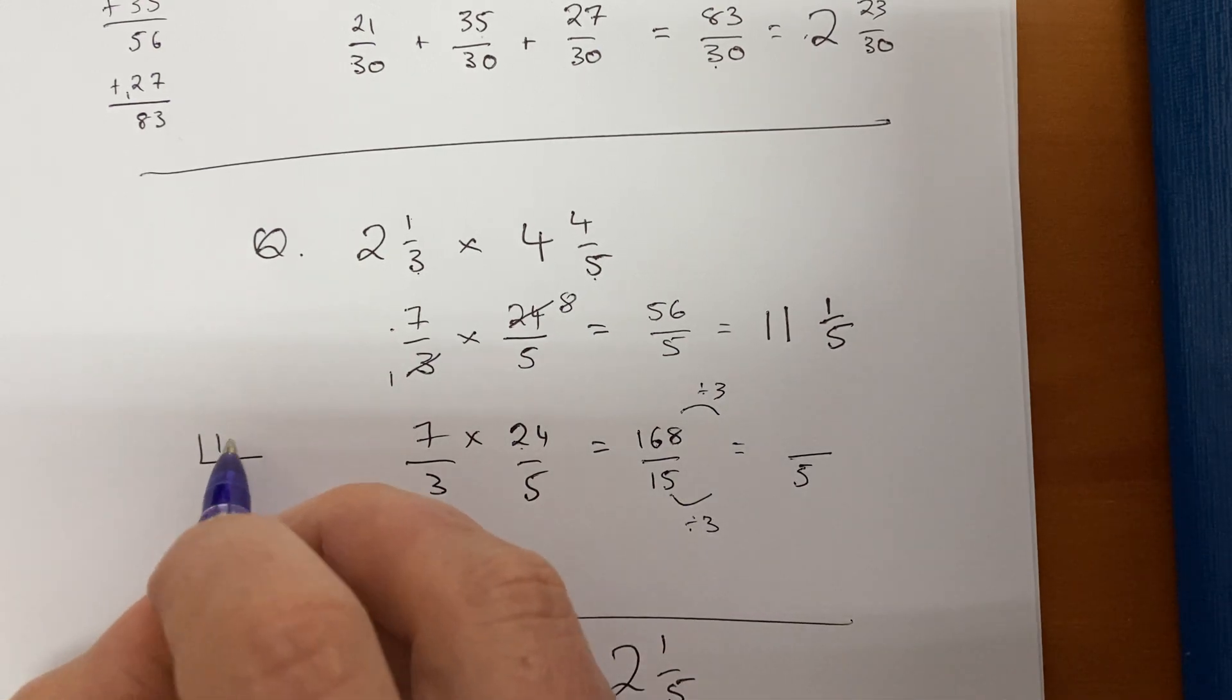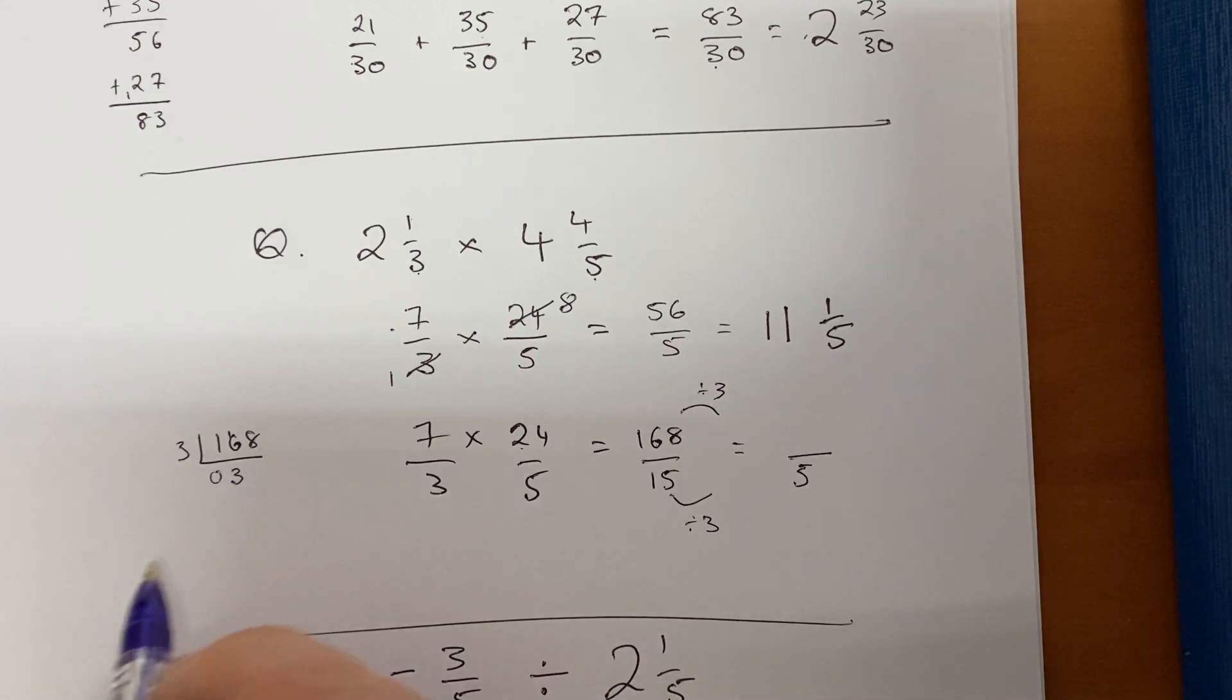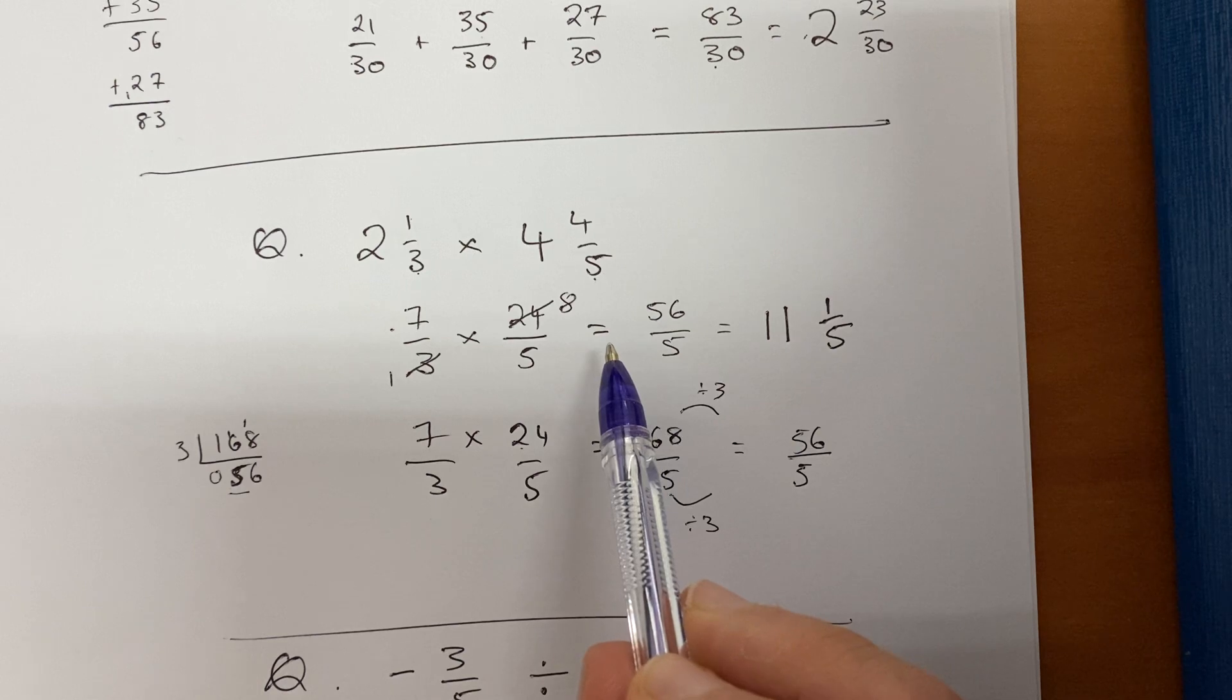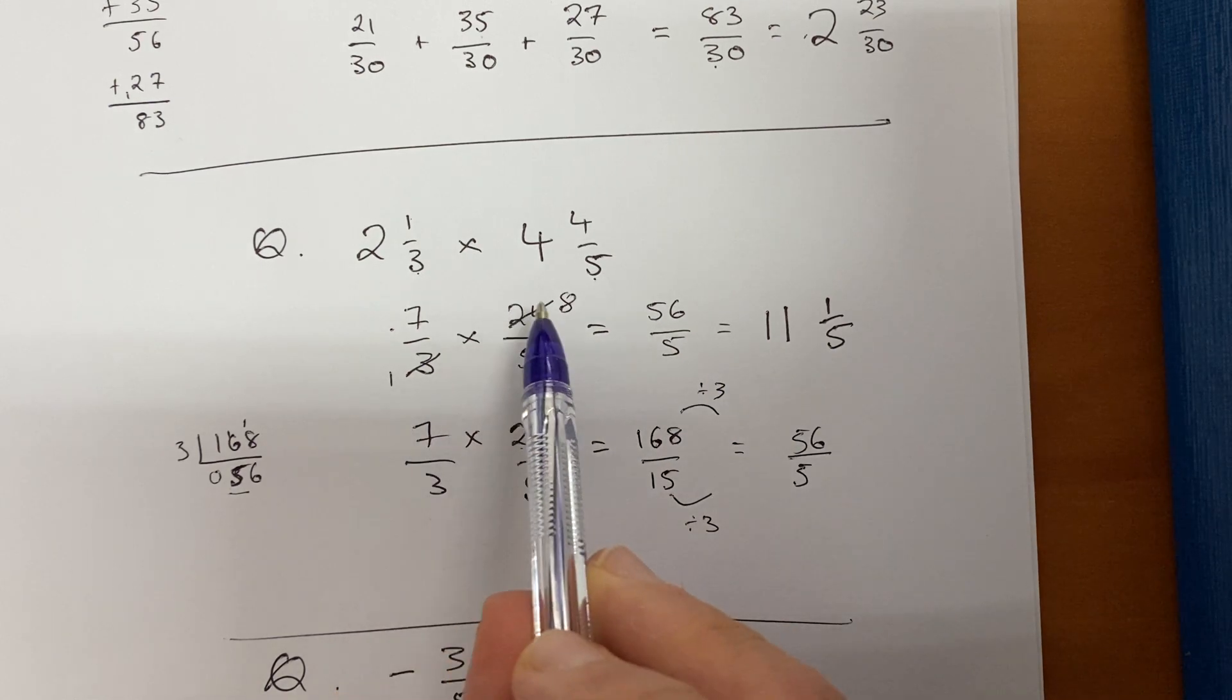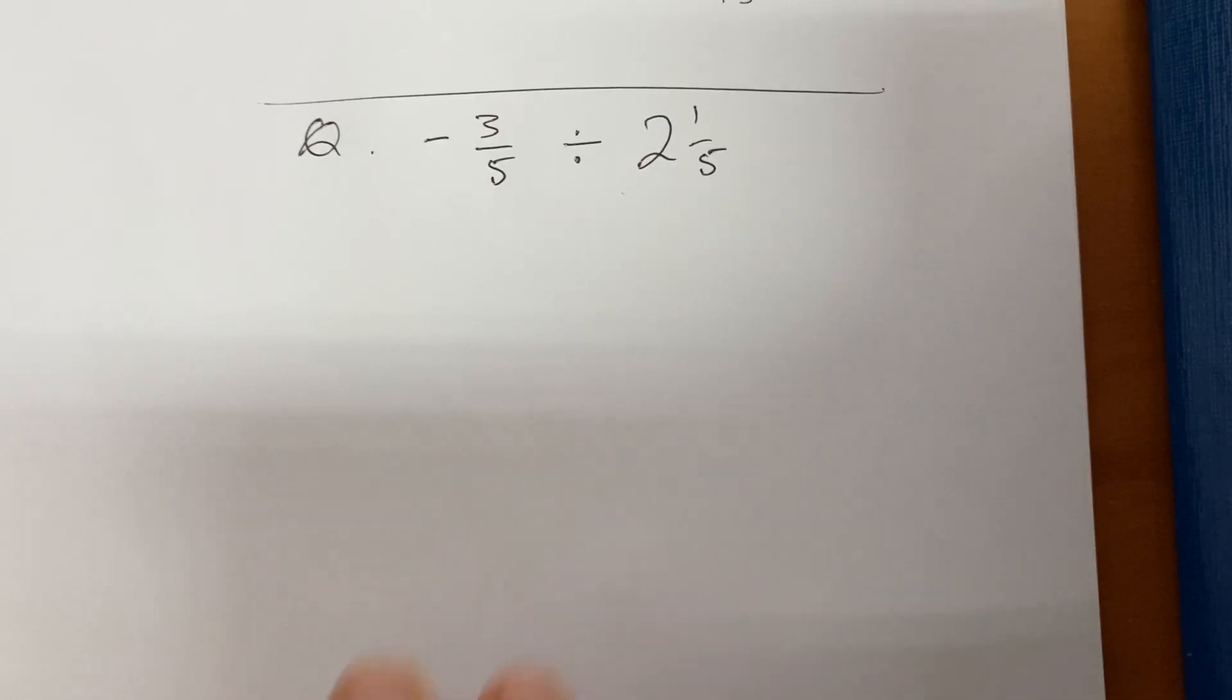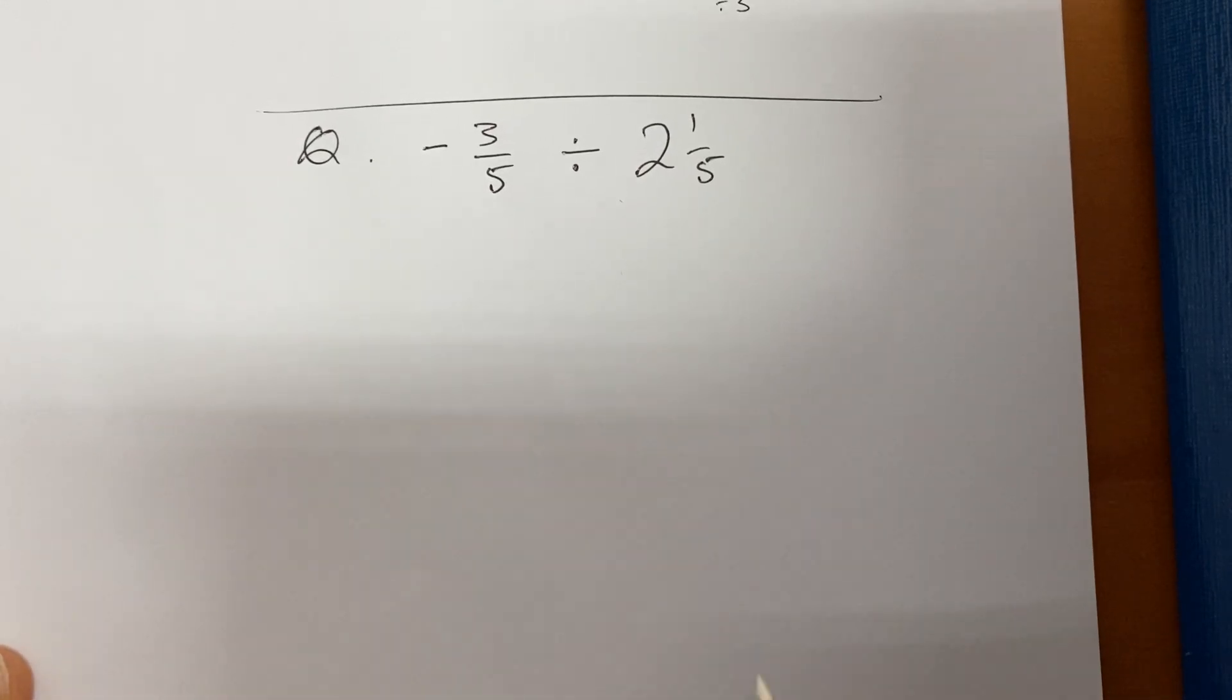15 divided by 3 is 5, and 168 divided by 3, well you can always do your rough work over here: 168 divided by 3, 3 into 1 doesn't go, 3 into 16 goes five times, remainder 1, 3 into 18 goes 6 times. We're left with 56 over 5. All right, we're back to the same answer, so perhaps it was easier to pre-simplify.